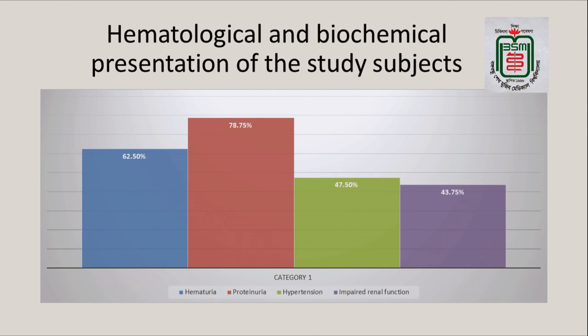Here are the hematological and biochemical presentations: hematuria was 62%, proteinuria 78%, hypertension was 47%, and impaired renal function was 43%. This type of presentation is the same as in Asian countries, but in European countries impaired renal function, hypertension, and hematuria were more prominent than proteinuria.